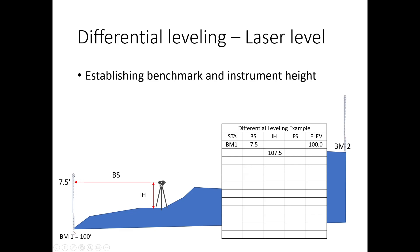We set up our instrument, level it, and have a line of sight. We set our rod right on Benchmark 1 and read the rod where the laser is pointing. On our data sheet, the station is Benchmark 1 — we already know the elevation, a known value of 100 feet. We take a back shot because it's a point of known elevation and read the rod at 7.5 feet. The instrument height is that back shot plus the elevation: 100 plus 7.5 gives us the height of our instrument plane in all directions.